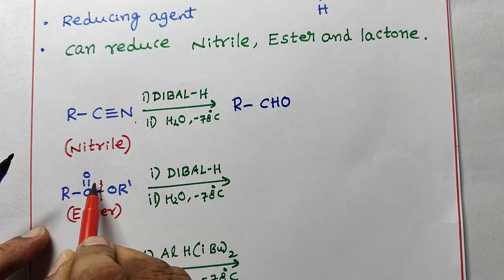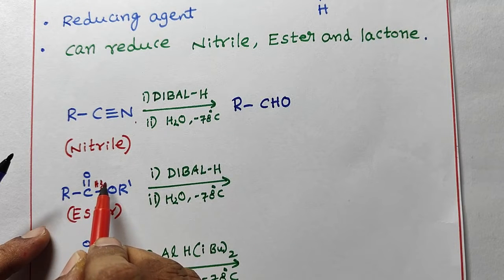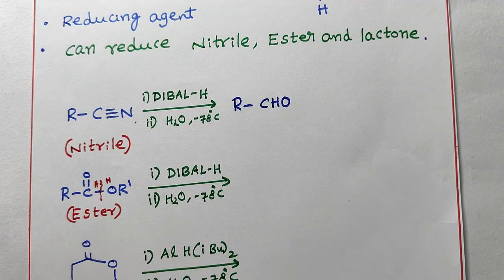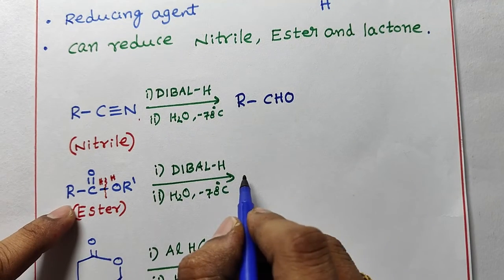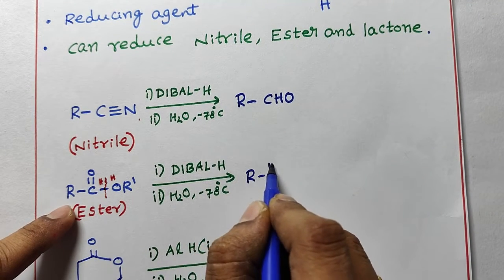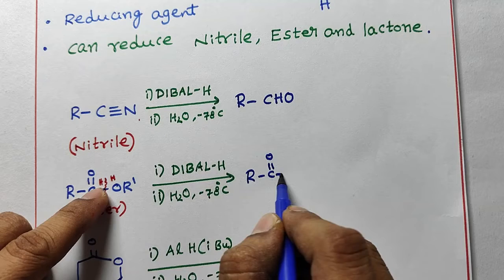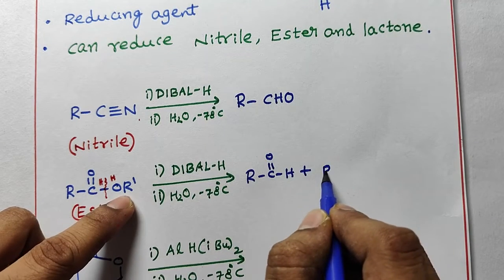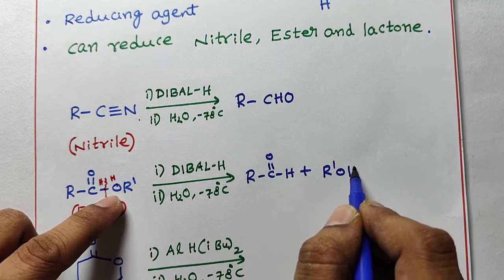Then how do you write the product? R-C double bond O, what I have written, hydrogen aldehyde. Next R-OH which is alcohol. Cyanide CN converted into CHO. Here ester converted into aldehyde and alcohol.